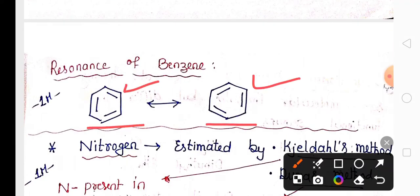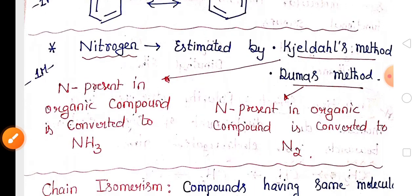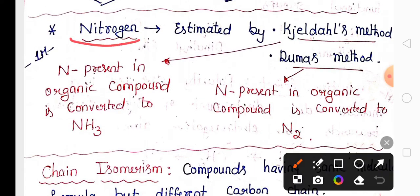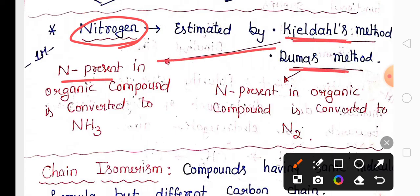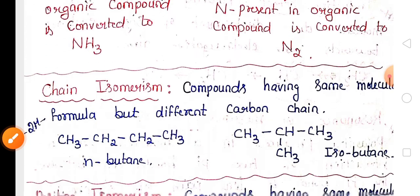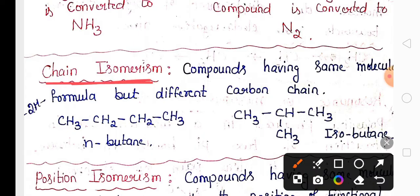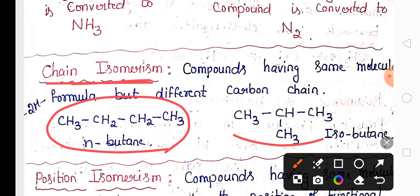The resonance structure of benzene is very important for one or two marks. To estimate nitrogen in organic compounds, there are two methods: Kjeldahl's method and Dumas' method. In Kjeldahl's method, nitrogen is converted into ammonia, whereas in Dumas' method, nitrogen is converted into nitrogen gas.